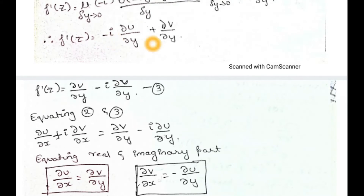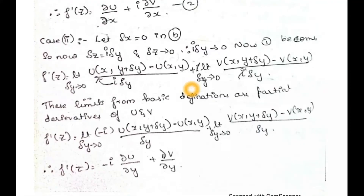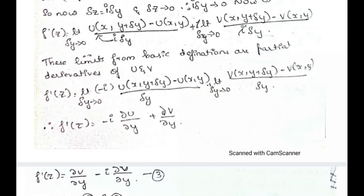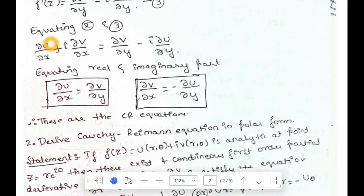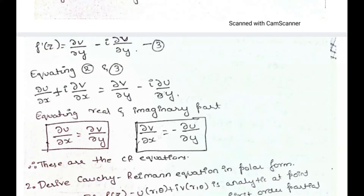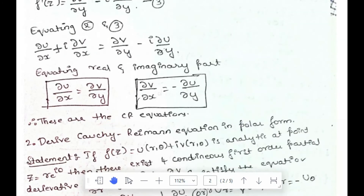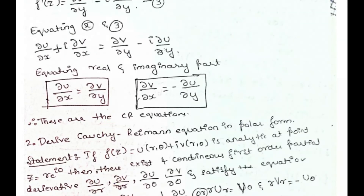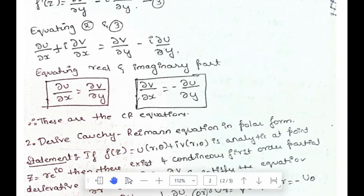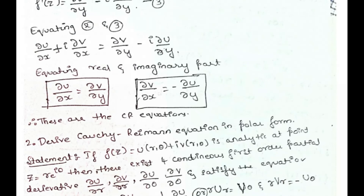On equating equation (2) and equation (3), we equate the real and imaginary parts: ∂u/∂x + i∂v/∂x = ∂v/∂y - i∂u/∂y. After equating real and imaginary parts, we get the CR equations. These are the first-order partial derivatives satisfying the CR equation in Cartesian form.